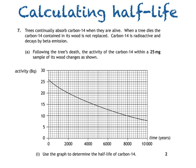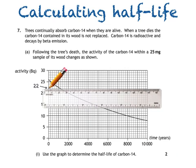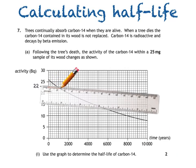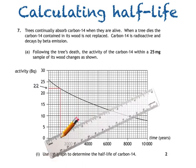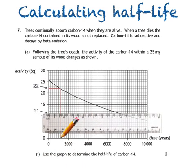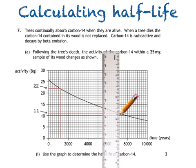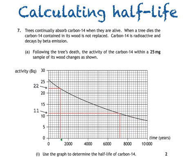So, we just follow the same method as before. From 22 becquerels, we draw along until we meet the line, then down to the x-axis, then the same for 11 becquerels. The green arrow again represents the half-life of the source, and we know that each division of the x-axis represents 200 years. This time, we find the half-life of the source to be 6,000 years.